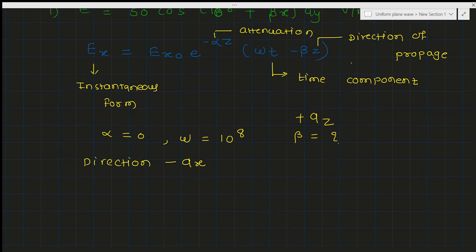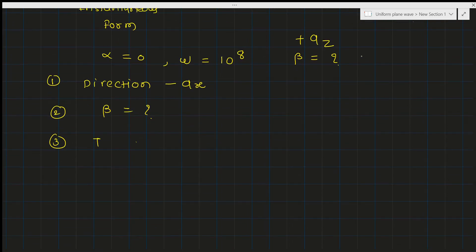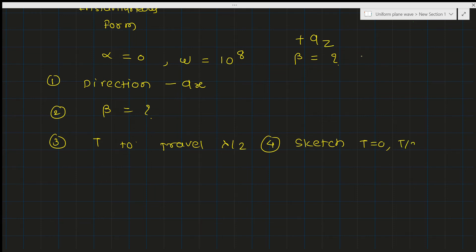We need to find four things: first, the direction of propagation; second, beta, the phase constant; third, the time taken to travel lambda by 2; and fourth, we need to sketch the waveform at t = 0, t = T/2, and t = T/4.